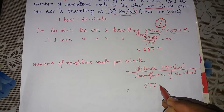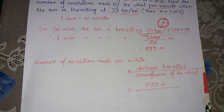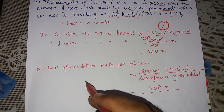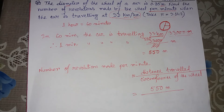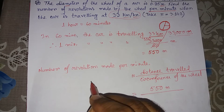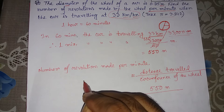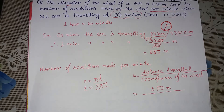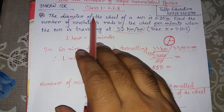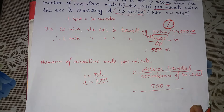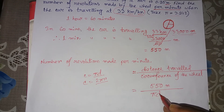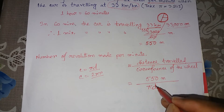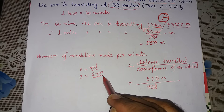The circumference of the wheel means the circumference of a circle. We know the formula: circumference equals pi times d (diameter), or 2 pi r (radius). Since we have the diameter of the wheel given, we will use pi times d.